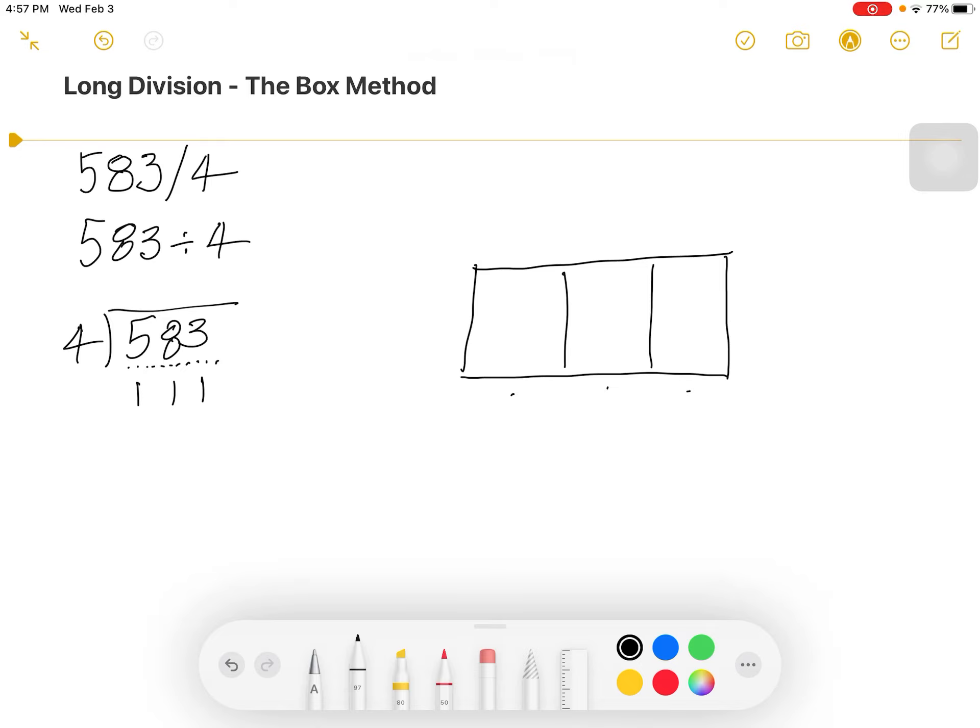Inside this box we add our dividend, and that dividend is 583. Please notice the placement. The placement is in the upper right hand corner of each of the smaller boxes. This will be important as we start working the problem.